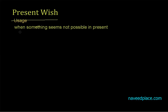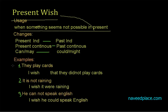The usage is: when something seems not possible in the present, that is the usage of present wish. Now, how can we express this? In order to learn this we need to see the usage, changes, and then examples. We will learn changes after examples.